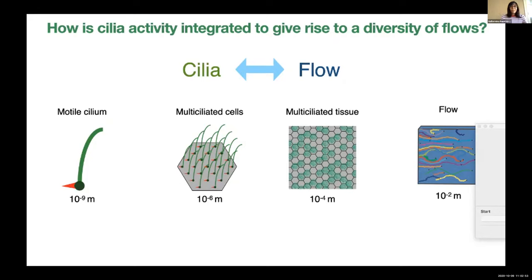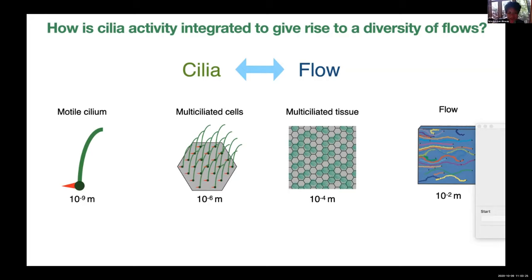If you have a motile cilium, you arrange them in a multi-ciliated cell, which can have from dozens to hundreds of cilia. You have to think about how you locate them inside a cell — the cilium has a polarity, with an active stroke and a recovery stroke, and how it's anchored to the membrane determines the direction of the active stroke. If you need to push fluid in the same direction and you have hundreds of cilia, you need to orient them in the same direction within a cell. At the tissue scale, you have hundreds and thousands of multi-ciliated cells that you need to organize in order to generate the flow required to achieve biological function.